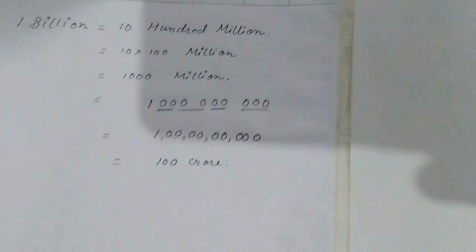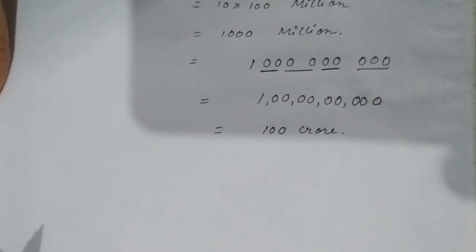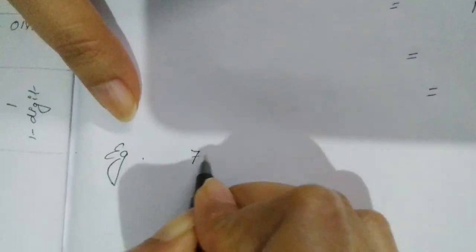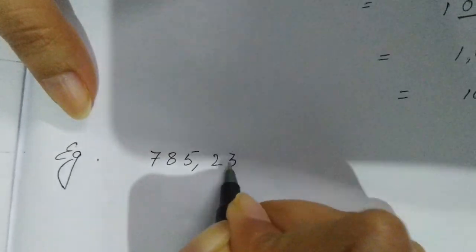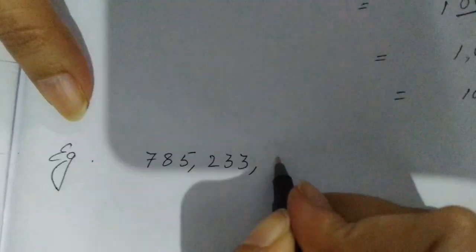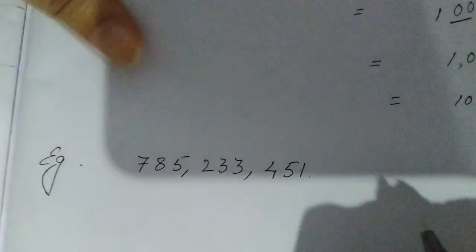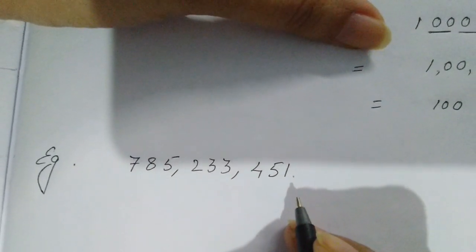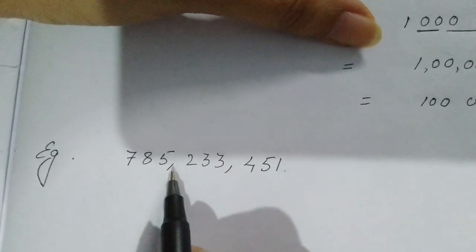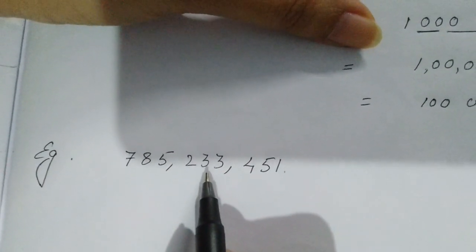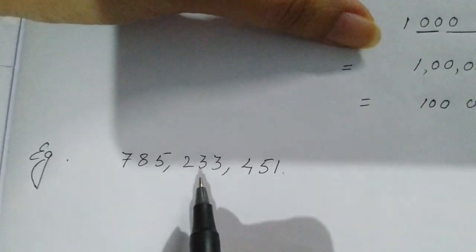Let's take more examples of converting between number systems. Suppose this number is given: 785,233,451. By looking at the commas placed at intervals of three digits, you can identify it is following the international number system.